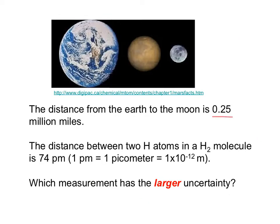Let's compare these two numbers, and which number has the larger uncertainty? Stop the video and think about that for a minute. For the answer, I'm going to circle the uncertain digit for each number and then look at the units. Note that a million miles is much larger than a picometer, so the answer is 0.25 million miles has the larger uncertainty compared to 74 picometers.